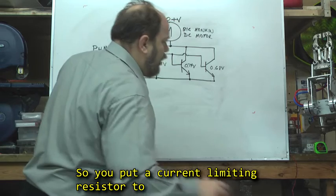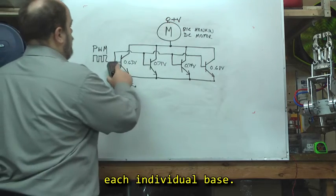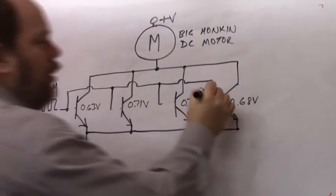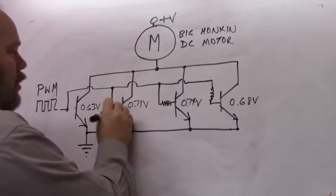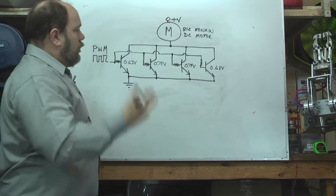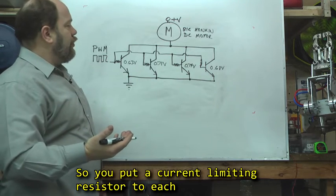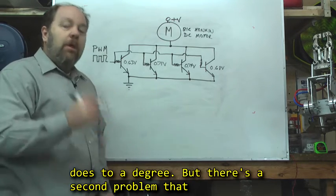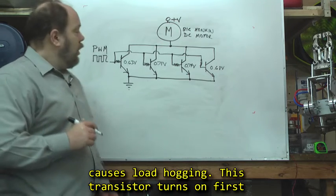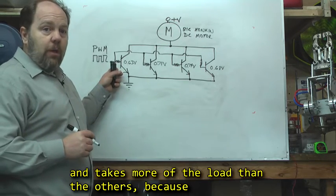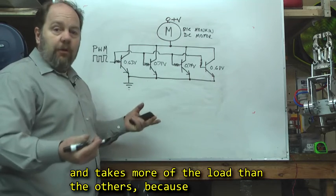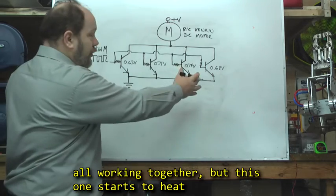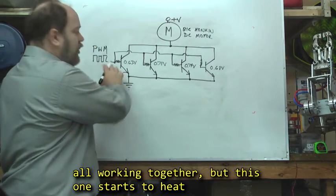So you put a current limiting resistor to each individual base. So you put a current limiting resistor to each individual base, thinking that will help, and it does to a degree. But there's a second problem that causes load hogging. So this transistor turns on first and takes more of the load than the others, because it is more forward biased than the others. They're all working together, but this one starts to heat up.